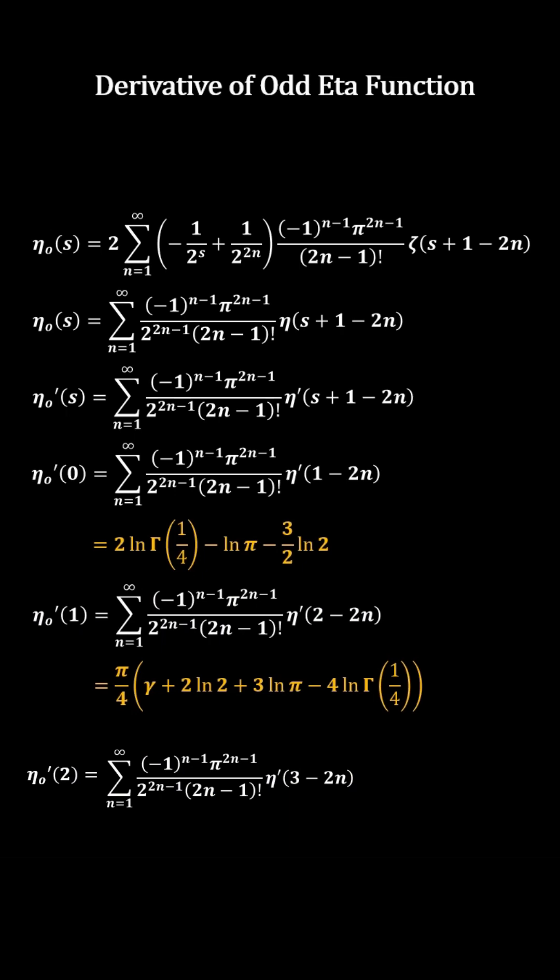Also, the derivative of the odd eta of 2 is pi over 2, the eta prime of 1 plus the sum of the eta prime of 3 minus 2n from n equals 2 to infinity.